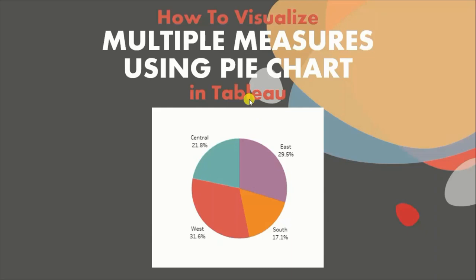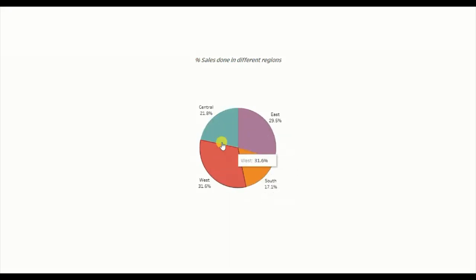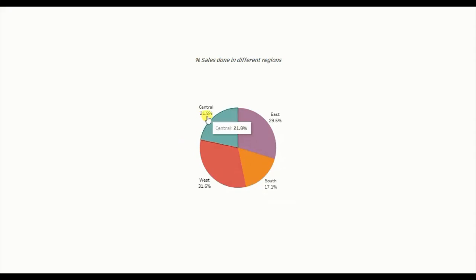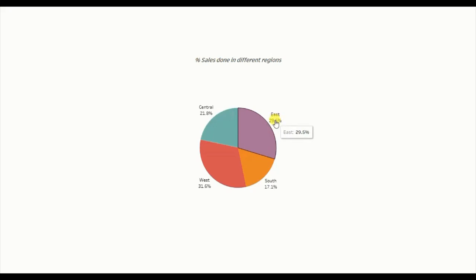Let me first show you the demo of what we will be doing today. Here I have a pie chart that shows percentage of total sales done in different regions — so 21.8% of sales was done in the central region, then 29.5% of sales was done in the east region, and so on. Instead of directly using the region column and sales measure, I have used four different measures, each for west, east, south, and central region, to create this pie chart.